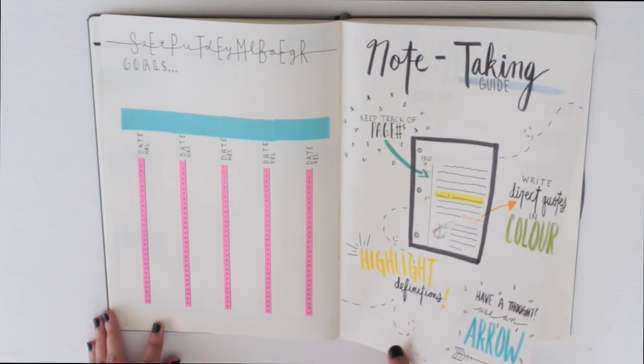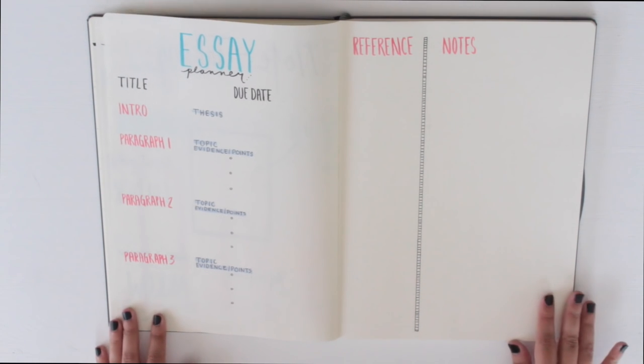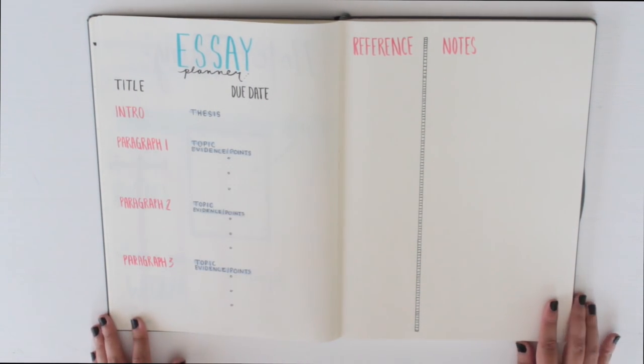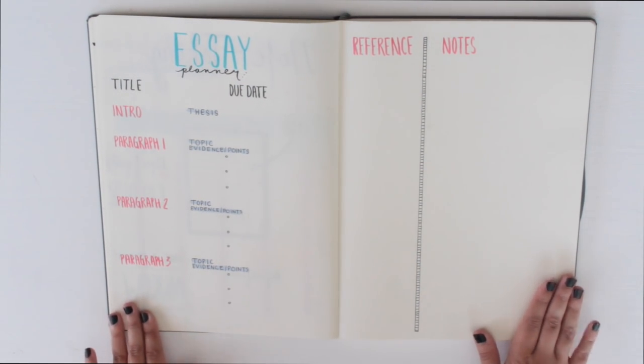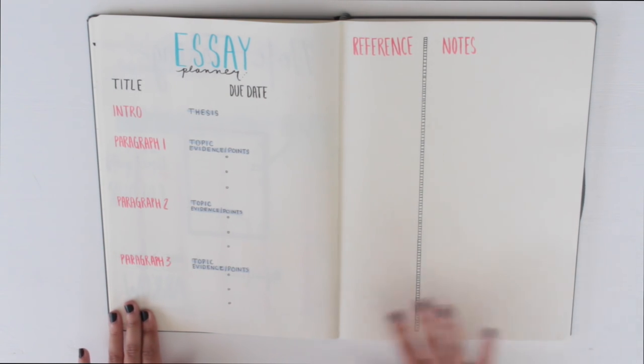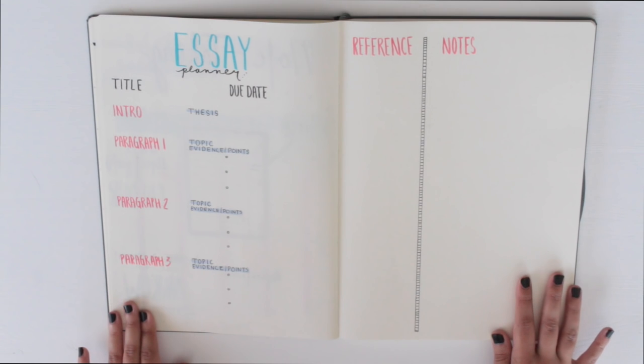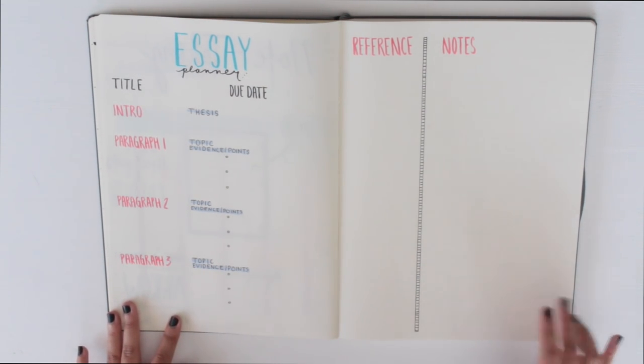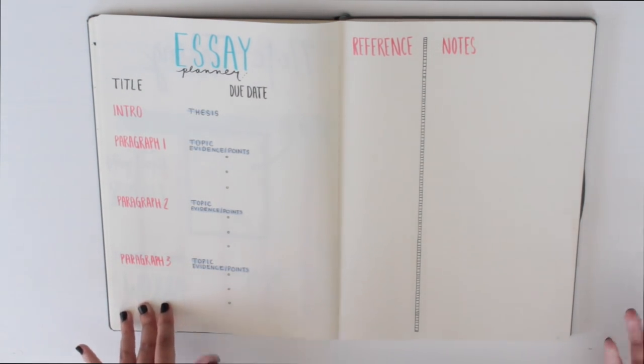Moving on to the last two pages, this is the essay planner. This is an example of an essay planner that I used quite often, this kind of general layout in first year. It obviously wasn't in a bullet journal because I hadn't started bullet journaling then, but it was in a notebook.